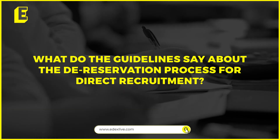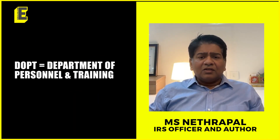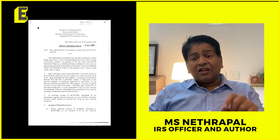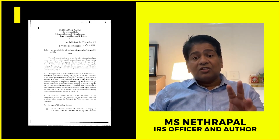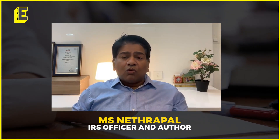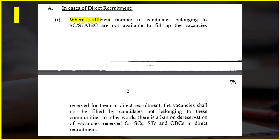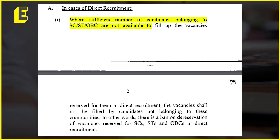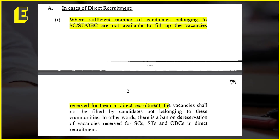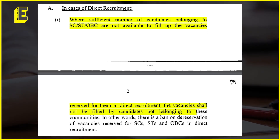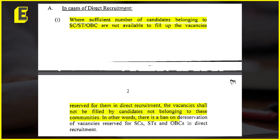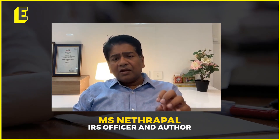What do the guidelines say about the de-reservation process for direct recruitment? I went into the DOPT guideline released on November 6, 2003. Para 3 of that OM states that where a sufficient number of candidates belonging to SC/ST/OBC are not available to fill up vacancies reserved for them in direct recruitment, the vacancy shall not be filled by candidates not belonging to these communities. In other words, there is a complete ban on de-reservation of vacancies reserved for SC/ST/OBCs in direct recruitment.